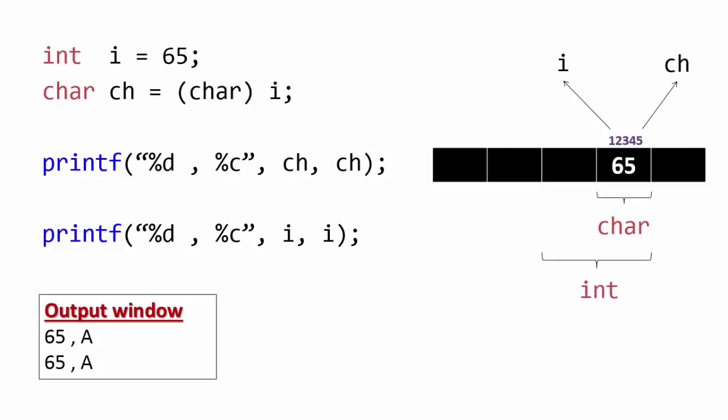Assigning bigger data type like int to a smaller data type like char requires casting. The casting means ignore the second byte and read only first byte of memory. Similarly, there are bigger data types like long which indicates 4 bytes of memory.